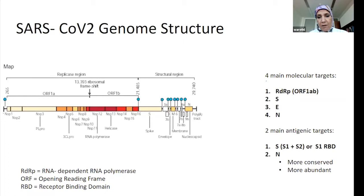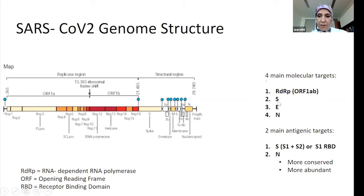There are four particular targets we can use to detect the virus. The most important ones are the RdRp, which is the RNA-dependent RNA polymerase, and then the S gene, the E gene, and the N gene.